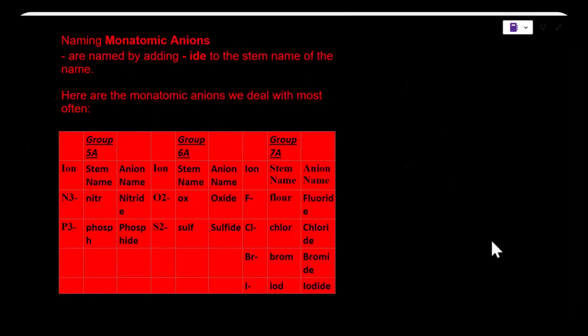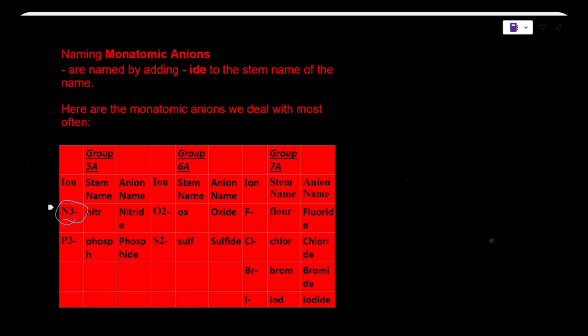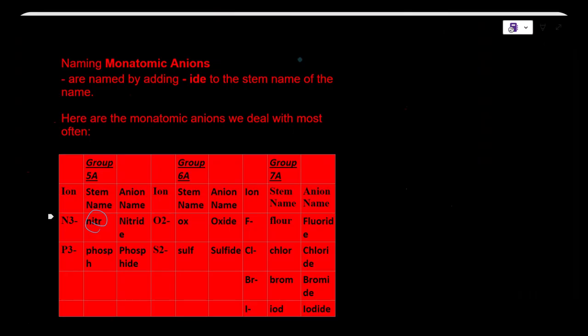Next we can start naming monoatomic anions. Anions are named by adding IDE to the stem of the name. Here are some monoatomic anions we deal with most often. So looking at nitrogen with a negative charge of 3, we would put IDE after the stem, so it would be nitride.